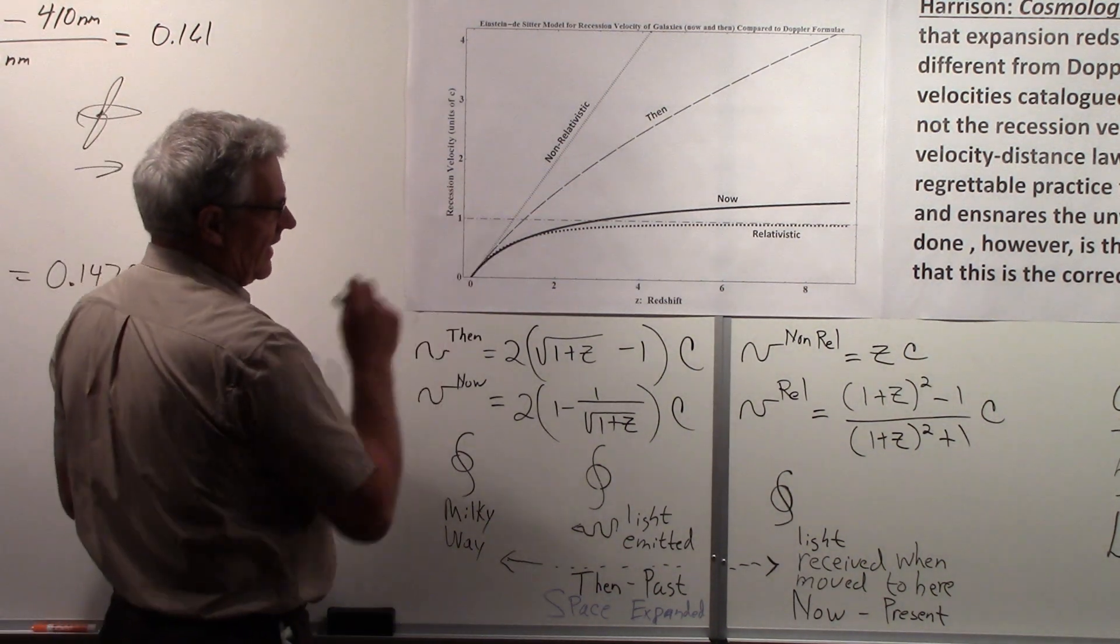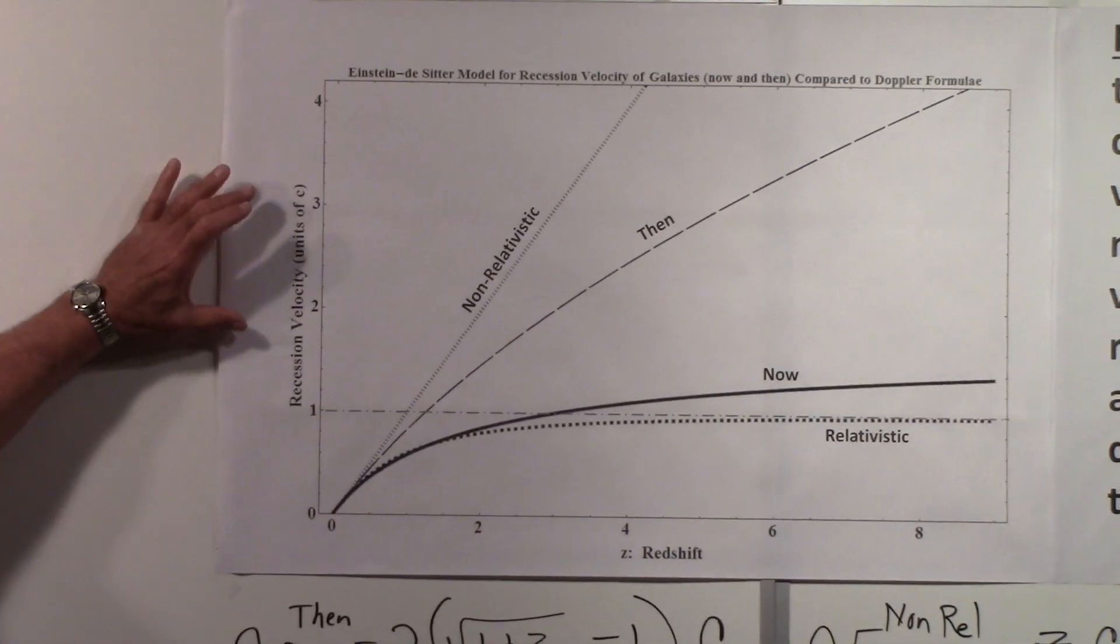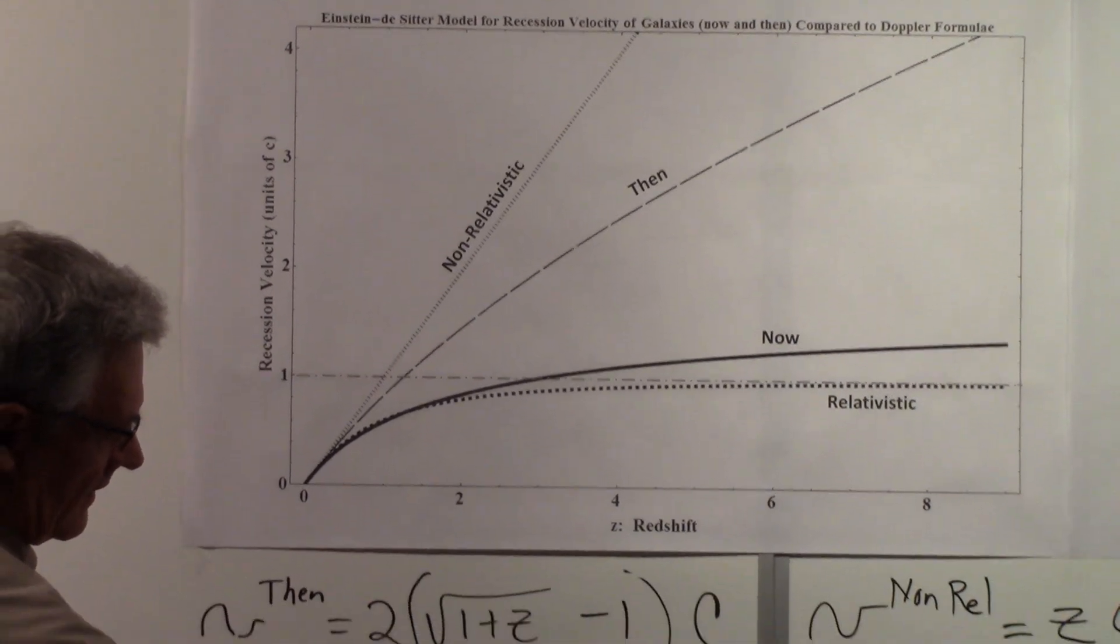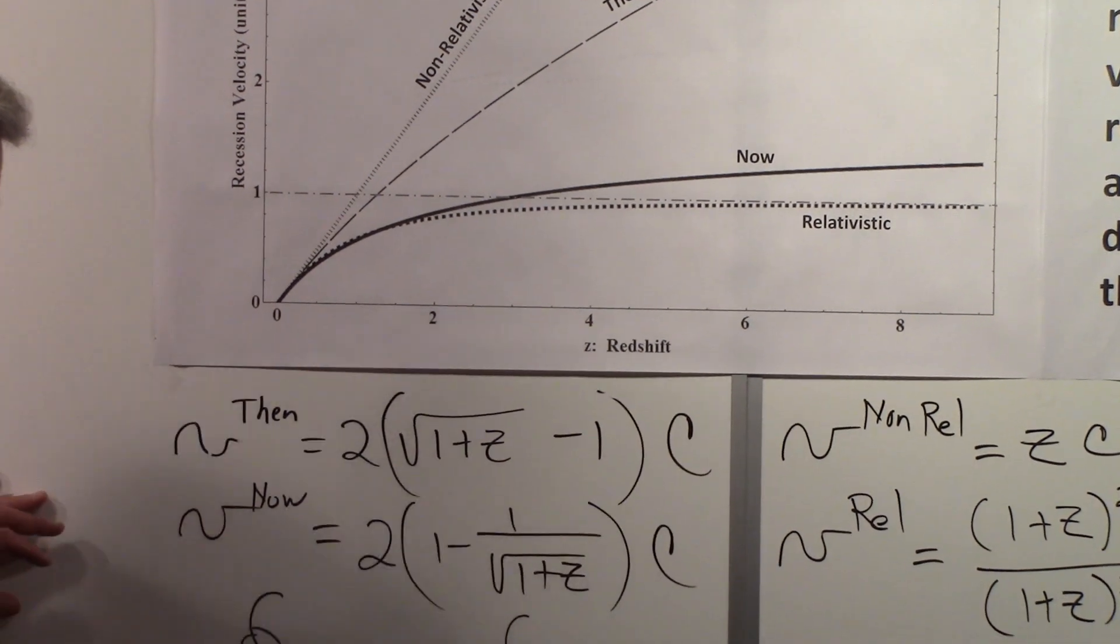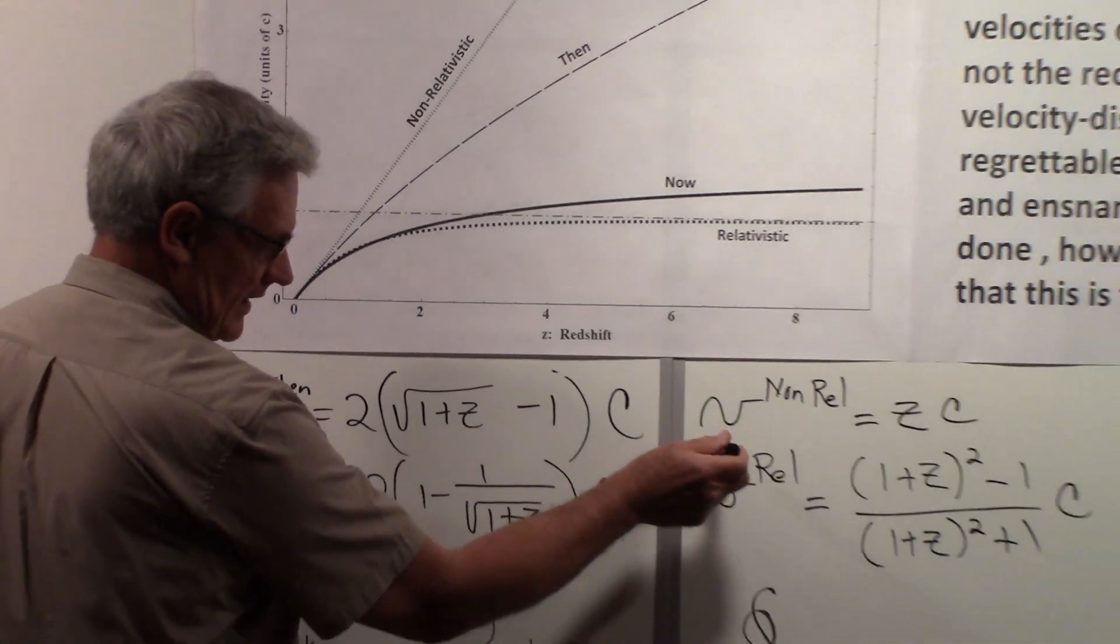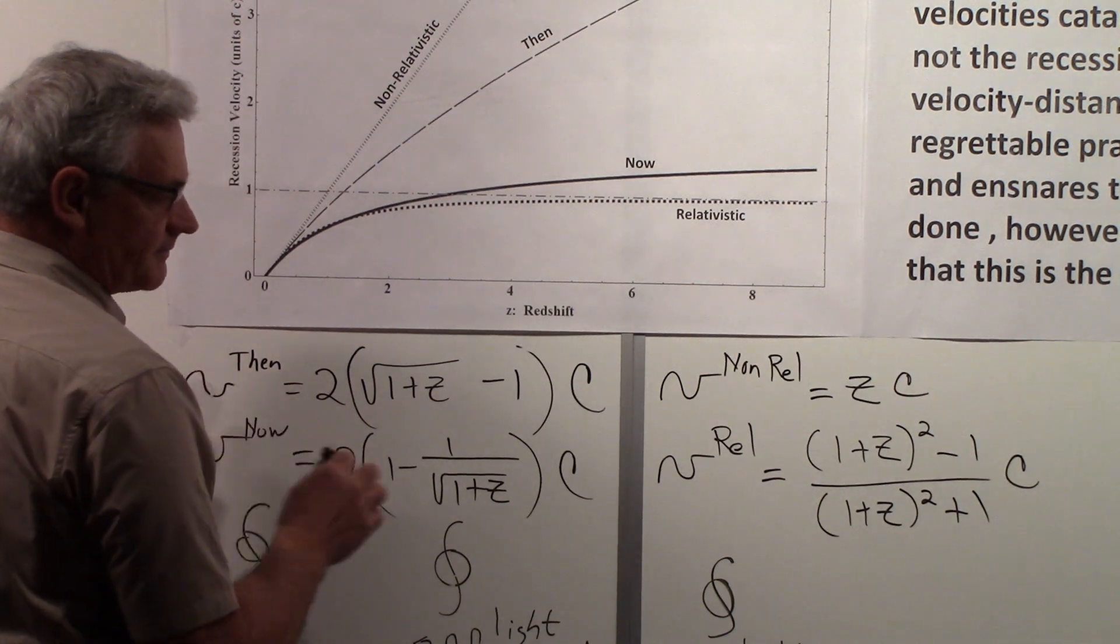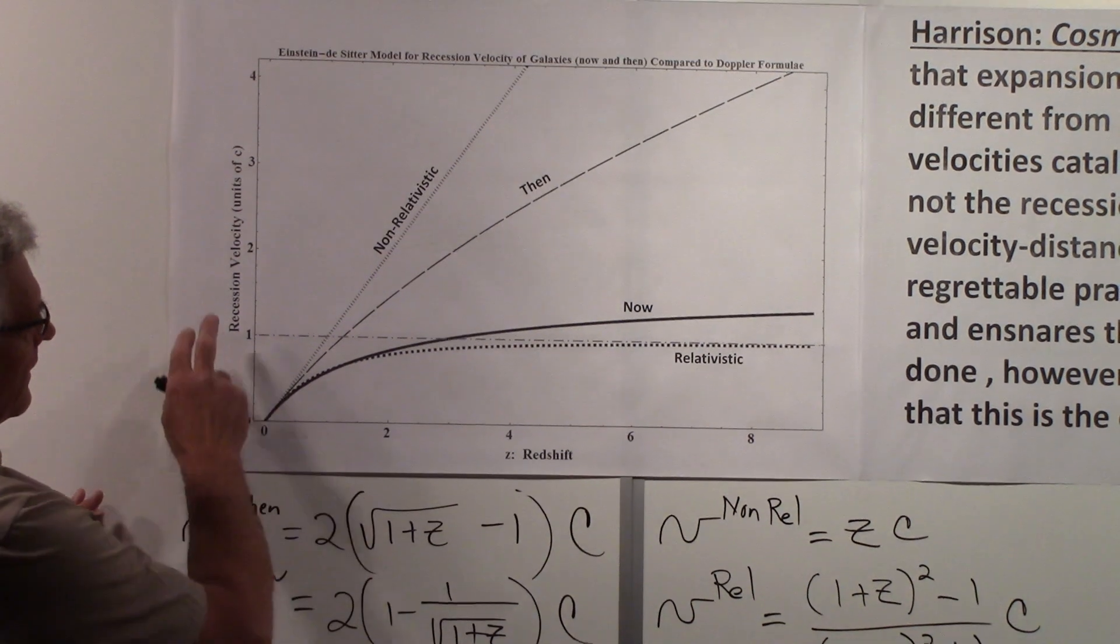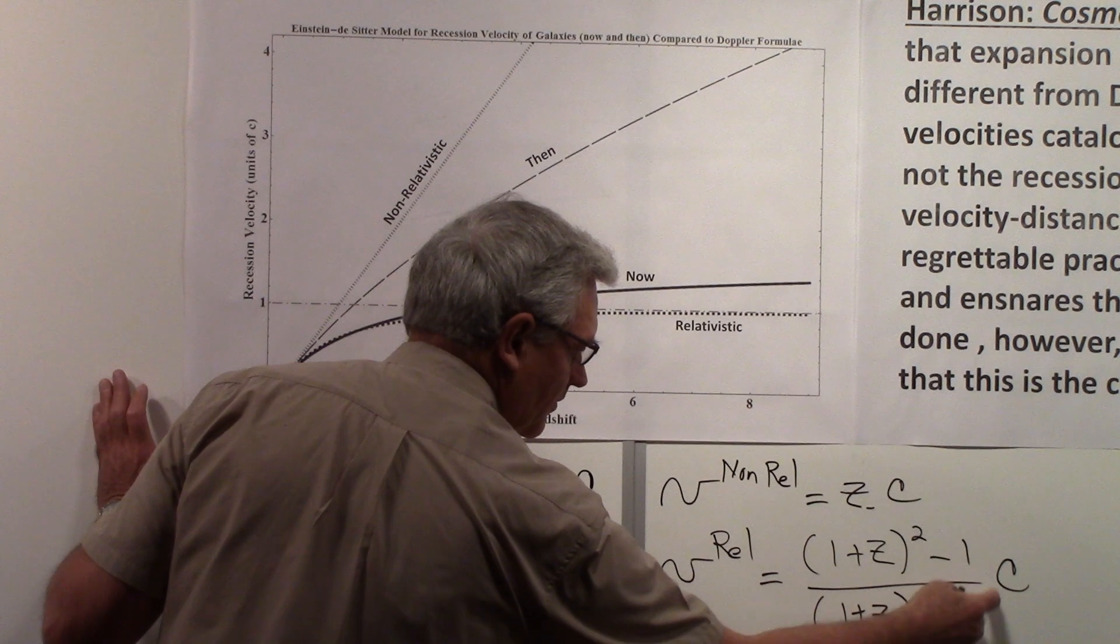So here's the 'then' and 'now' plotted versus the redshift for recession velocity in units of c. In other words, I am plotting this part and this part, I'm basically letting c equal one. I'm also plotting the formulas that we had over there that I show here again: the non-relativistic Doppler formula and the relativistic Doppler formula, and they're plotted here again in units of c. So I'm basically just plotting z and this part of that expression.